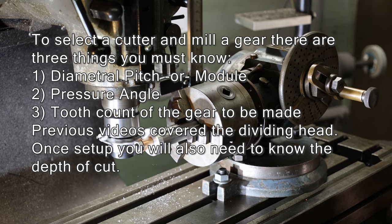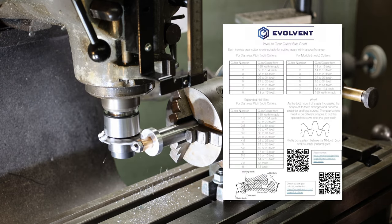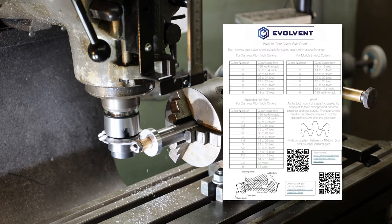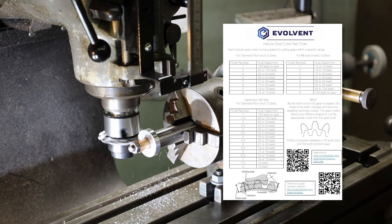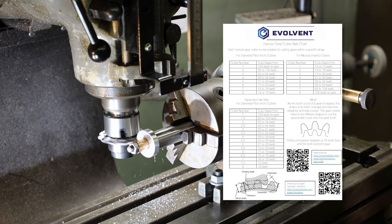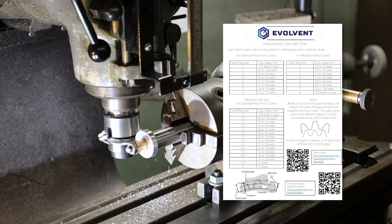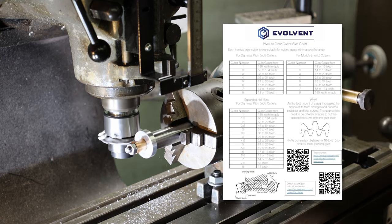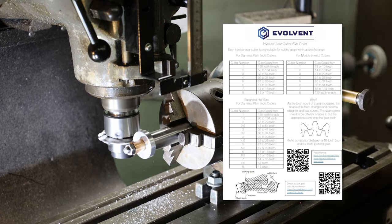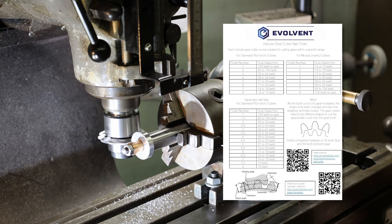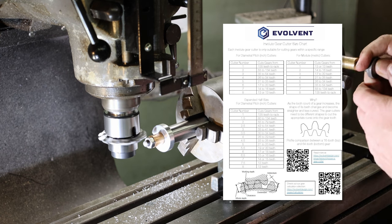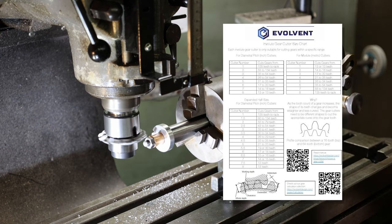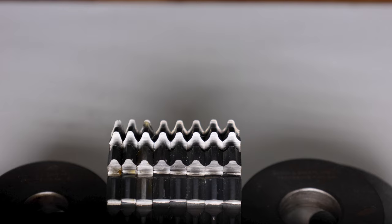Here's a handy chart that shows, at least by convention of certain suppliers, tooth count versus gear cutter number. It also shows that you can get gear cutters in half sizes to get even more accurate on your involute shape for the gears you're trying to make, and it gives references back to information on hole count.